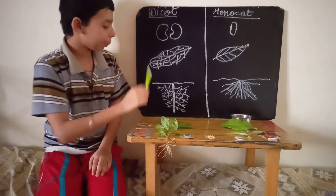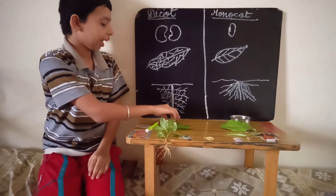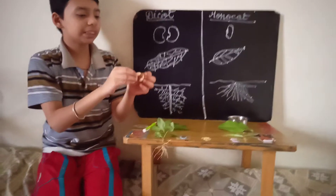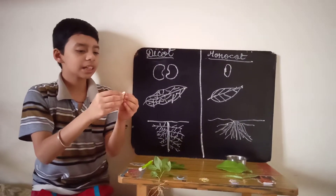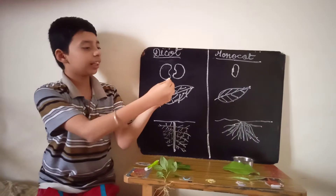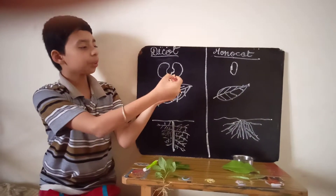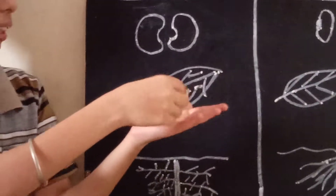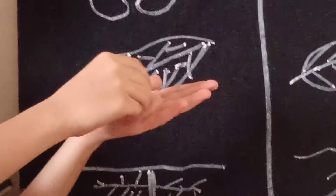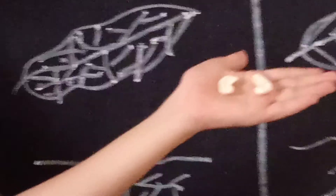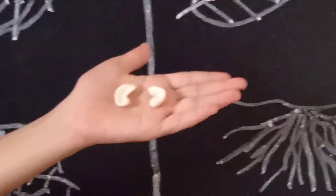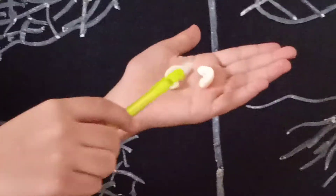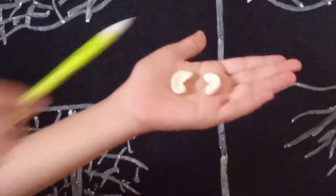The best example is cashew nut. See, it was like this and I divided it into two halves. This is a dicot seed — it has two seed leaves. This is the seed leaf.